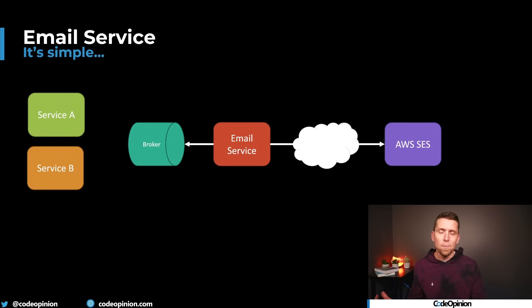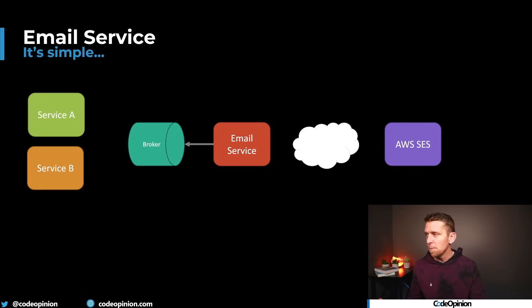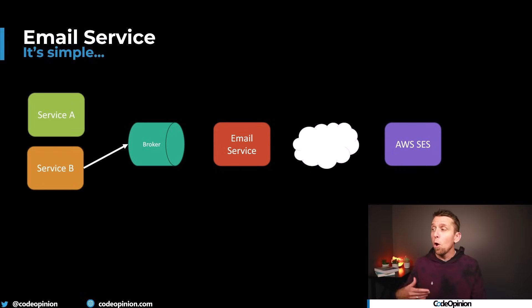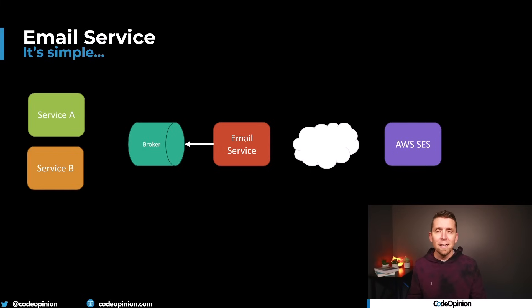That could be with AWS SES, SendGrid, whatever the case may be. We just have all these different services publishing all their respective events and we have this email service that's consuming and aware of all these events so it can send out those relevant types of emails.